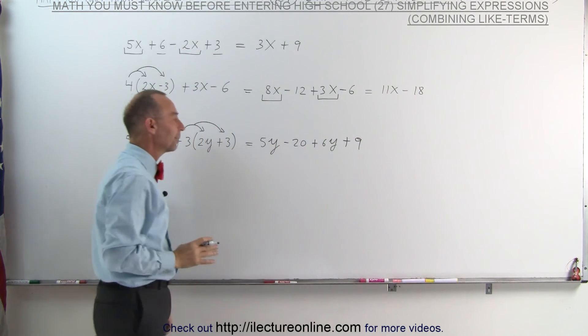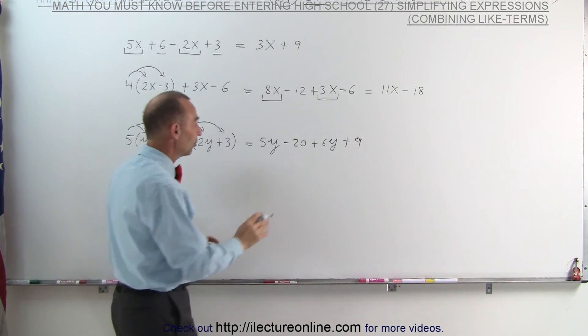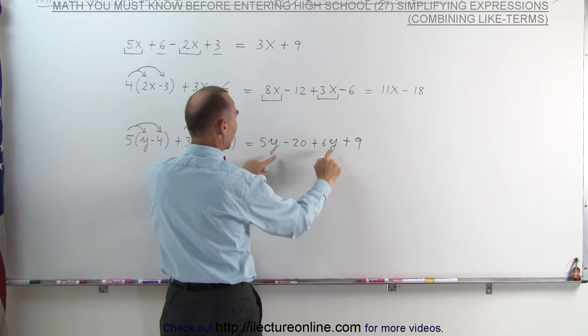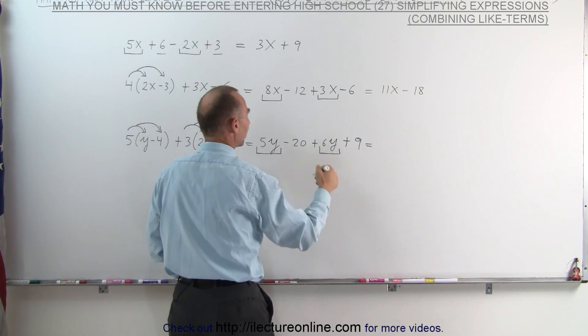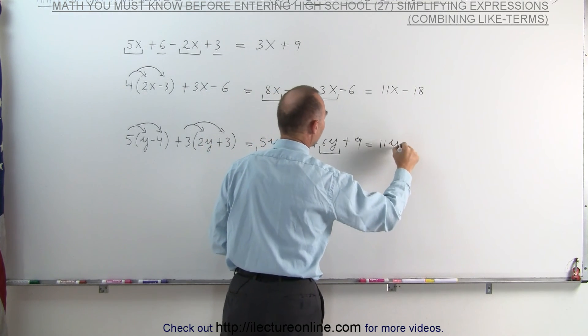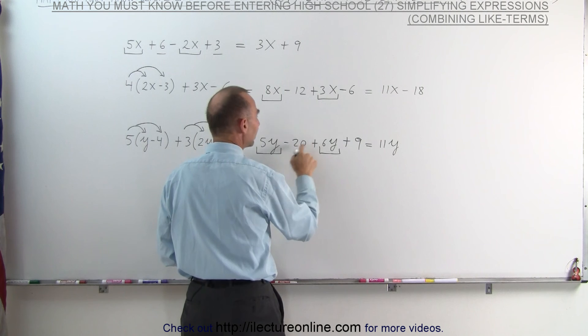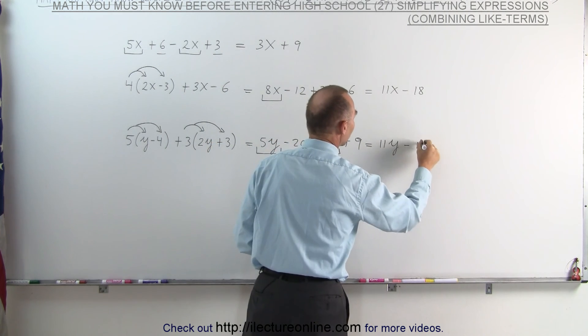Now that we have gotten rid of the parentheses, let's combine like terms. Here are two like terms. Their letter parts are the same. We can add those two together. This becomes 5y plus 6y is 11y, and minus 20 plus 9 is minus 11.